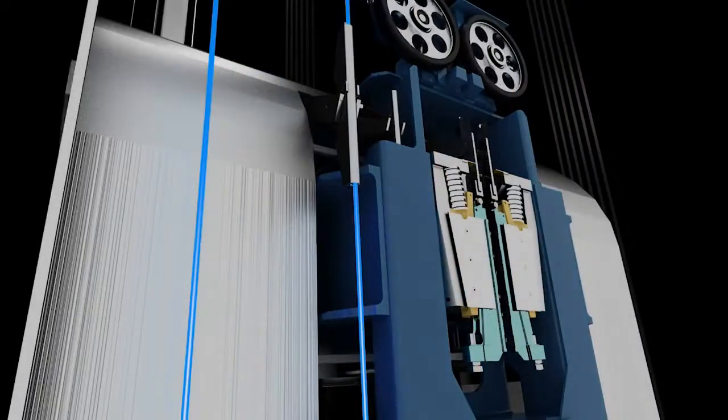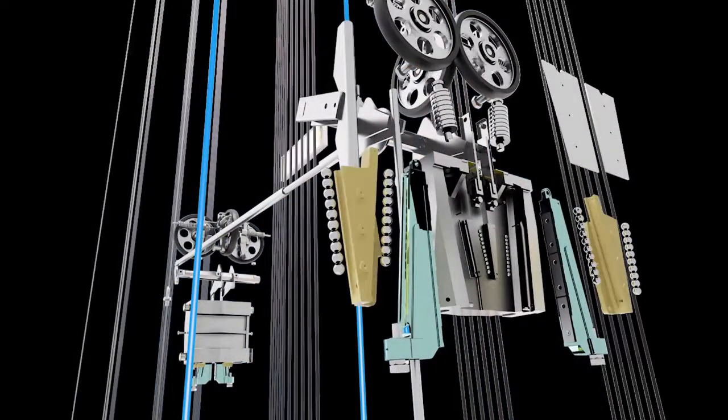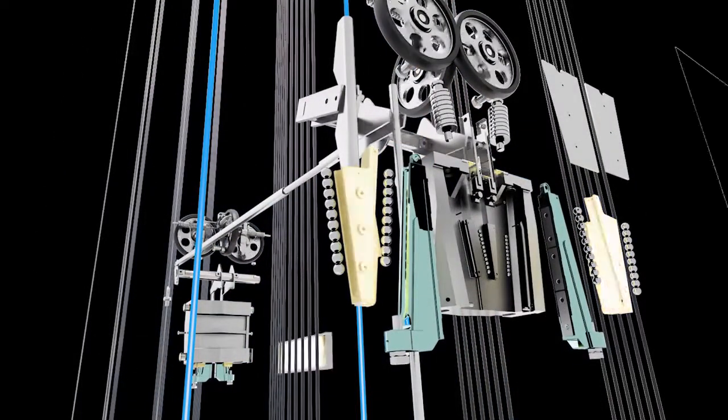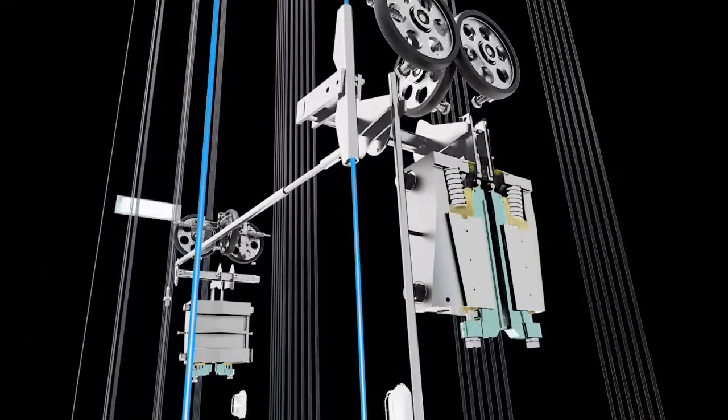The other end of the rope is connected to the safety gear device in the car's frame. The over-speed governor rope pulls the safety gear wedges up. As the wedges make contact with the guide rails, they safely slow the car to a complete stop.